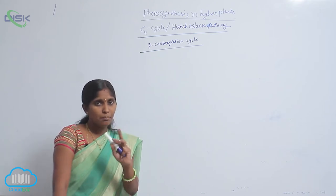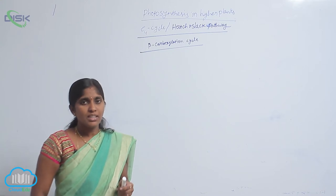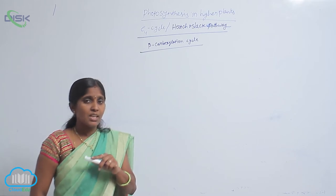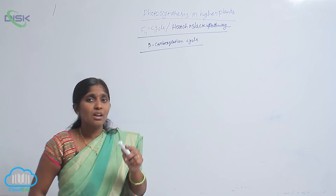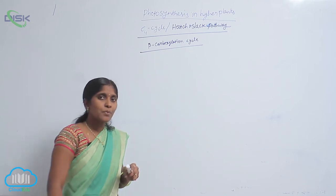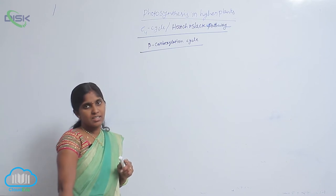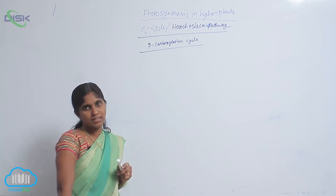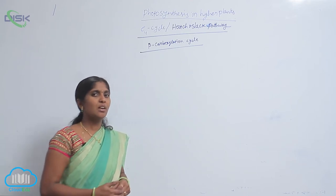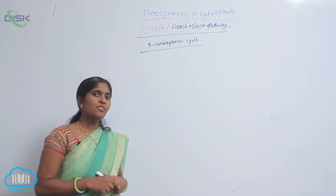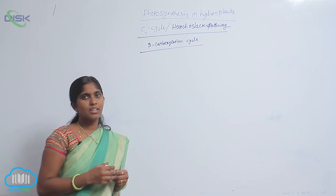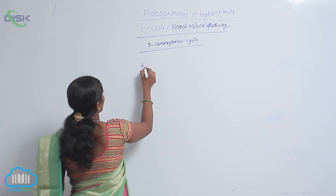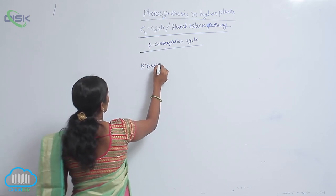Comparing the C3 and C4 cycles: in the C3 cycle, only one PCR cycle is conducted, but in the C4 cycle, along with the C4 cycle, the C3 cycle is also carried out. That is why, in terms of photosynthetic yield, C4 plants are more efficient than C3 plants. Now let us look at the leaf anatomy of C4 plants, which is called Kranz anatomy.